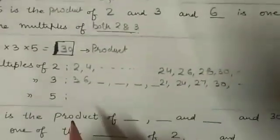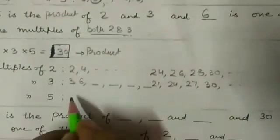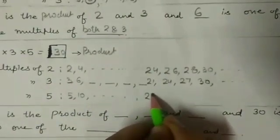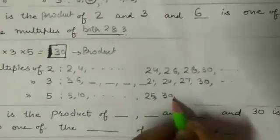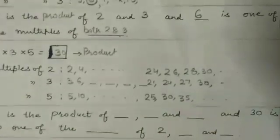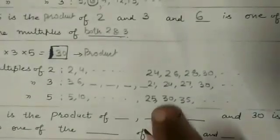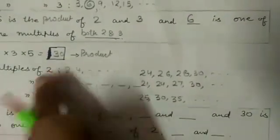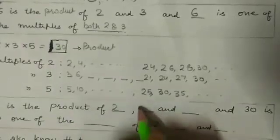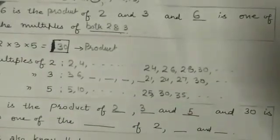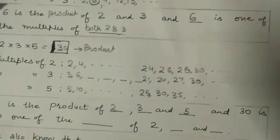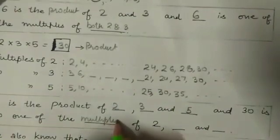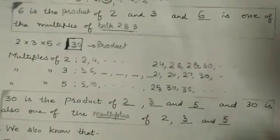Now let us write the multiples of 5: 5, 10, 15, 20, 25, 30, 35 and so on. Again I have got multiple 30 here in the table of 5. Now what we observe: 30 is the product of 2, 3 and 5, and 30 is also one of the multiples of 2, 3 and 5.